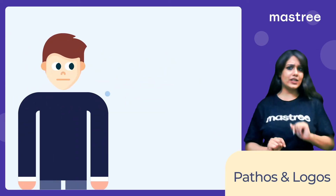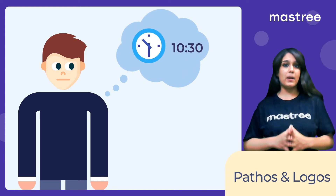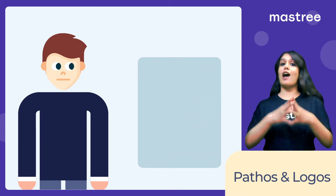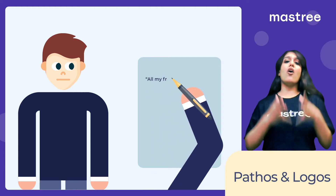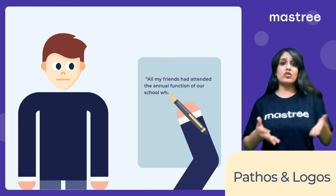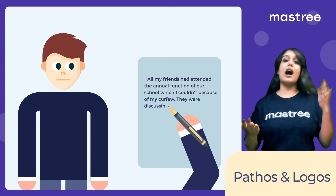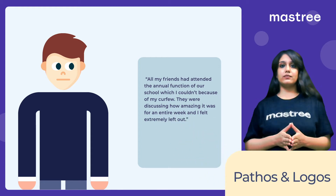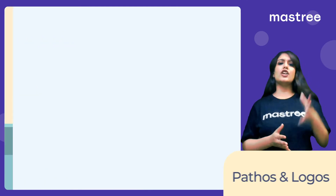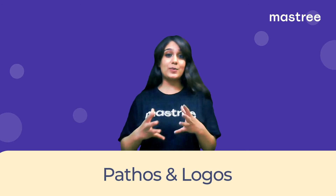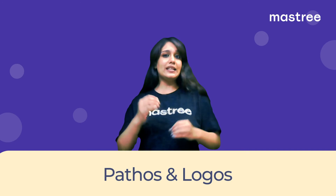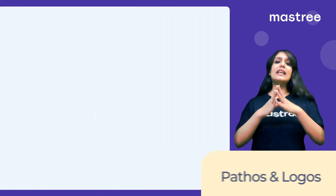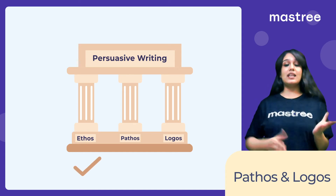Remember Adam who wanted to convince his parents to change his curfew from 8:30 PM to 10:30 PM but failed to do so? Let's look at his note and see where he can include pathos to improve his argument. Adam writes: 'All my friends had attended the annual function of our school, which I couldn't because of my curfew. They were discussing how amazing it was for an entire week and I felt so left out.' In addition to ethos, Adam was able to make his parents a bit emotional regarding his curfew. Including this in his note definitely made his parents consider his request a bit more. So, till now we have covered two pillars of persuasive writing: ethos and pathos.